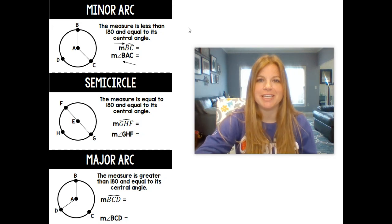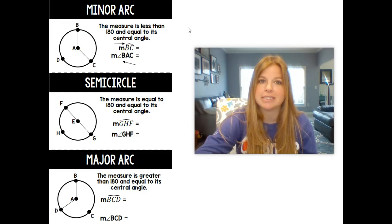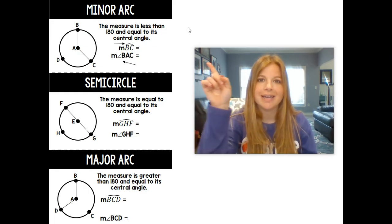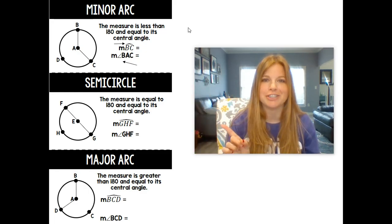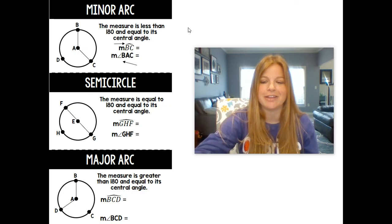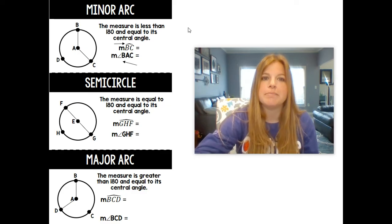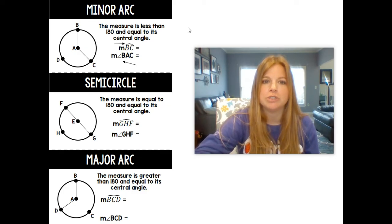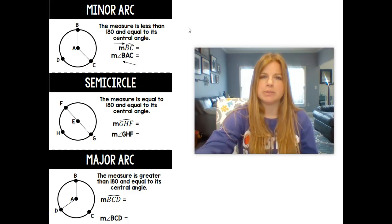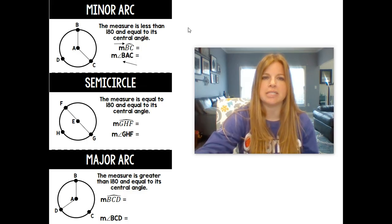Hi everyone, thank you so much for watching my video. Today we're going to be talking about the measures of arcs and there's three different cases: a minor arc, a semicircle, and a major arc. So let's take a look together. It says the measure is less than 180 and equal to its central angle. That's what a minor arc is.